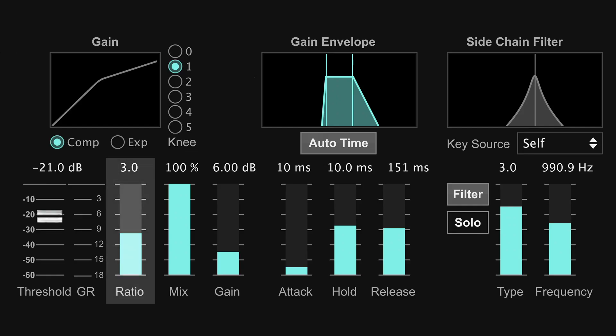Ratio determines how much compression is applied. For example, if the ratio is set to 4 to 1, for every 4 dB the signal crosses over the threshold, it will be compressed down to 1 dB. So if the signal has crossed the threshold by 8 dB, only a 2 dB increase would be heard.